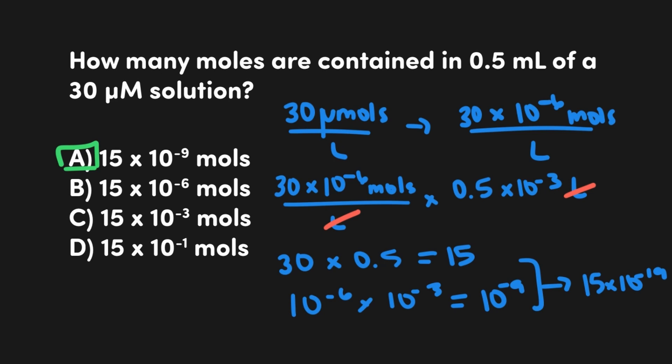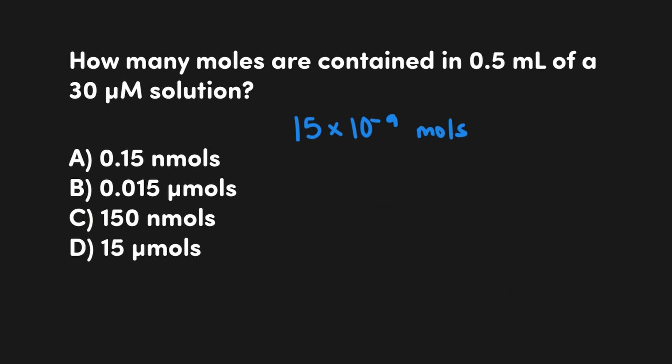The answer choices were straightforward there, but what if they weren't listed in scientific notation and instead used SI prefixes? When this happens, I prefer to convert my answer choices into scientific notation rather than my number into an SI prefix — it's typically easier, and we don't have to worry about which SI prefix to pick. Before blindly converting every value, I look for freebies: anything with the same integer value as well as the same scientific notation.